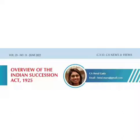Before the enactment of the Indian Succession Act, 1925, the Hindus and the Muslims were governed by their respective personal laws for the purpose of inheritance and succession. However, there were a lot of uncertainties in respect of inheritance and succession in case of other religions. Various different laws were enacted to cater to the needs of the different sects and different situations. To fill in the gaps under various acts, the Indian Succession Act was executed in 1865.